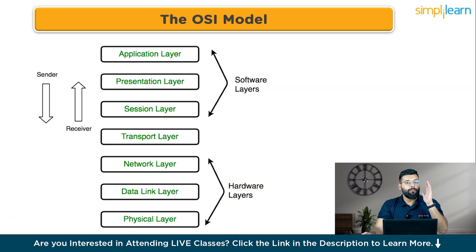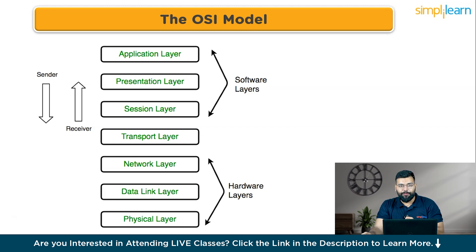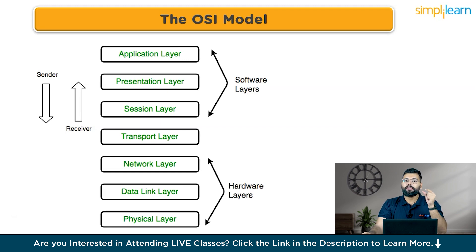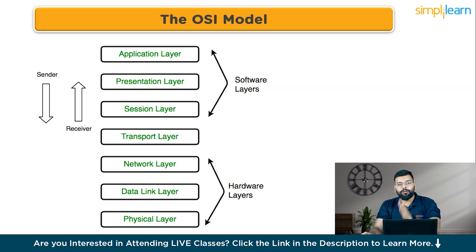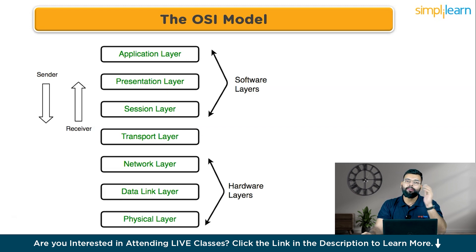Layer 2 is the data link layer — imagine this as traffic management systems that organize data flow so that bits can find a way without crashing into each other. It provides node-to-node data transfer and handles error correction from the physical layer. Layer 3 is the network layer — like a navigation system that finds the best path for data to travel across networks based on network conditions and priority of service. Layer 4 is the transport layer — the delivery service that ensures the entire message arrives intact and in order, managing data flows between hosts.